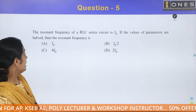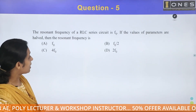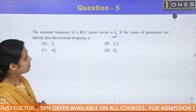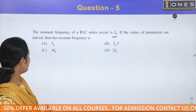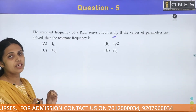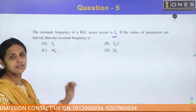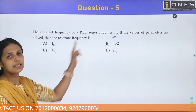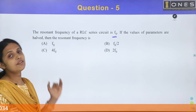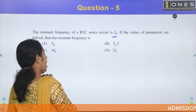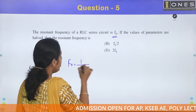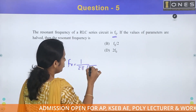Fifth question. The resonant frequency of a series RLC circuit is F0, given by F0 = 1 / (2π√LC). If all parameters — L and C — are halved, then what is the new resonant frequency? With L replaced by L/2 and C replaced by C/2.